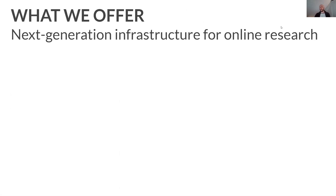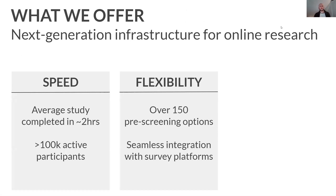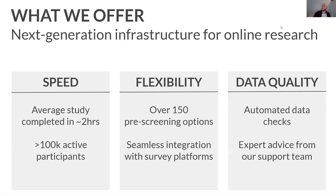In terms of what we offer that's unique, we think there are three really key selling points of Prolific that stand apart from the competition. First, it's really quick — most studies are completed on Prolific in about two hours, but many are going to be completed in about five, ten, or fifteen minutes. It's also really flexible — you saw earlier the opportunity to do representative sampling, and we also have 150 pre-screening options, so whatever your sample, we should be able to provide it. And finally, data quality — this is the main point of my talk. Prolific really has a massive focus on ensuring we give you the best participants possible so you get high-quality data.